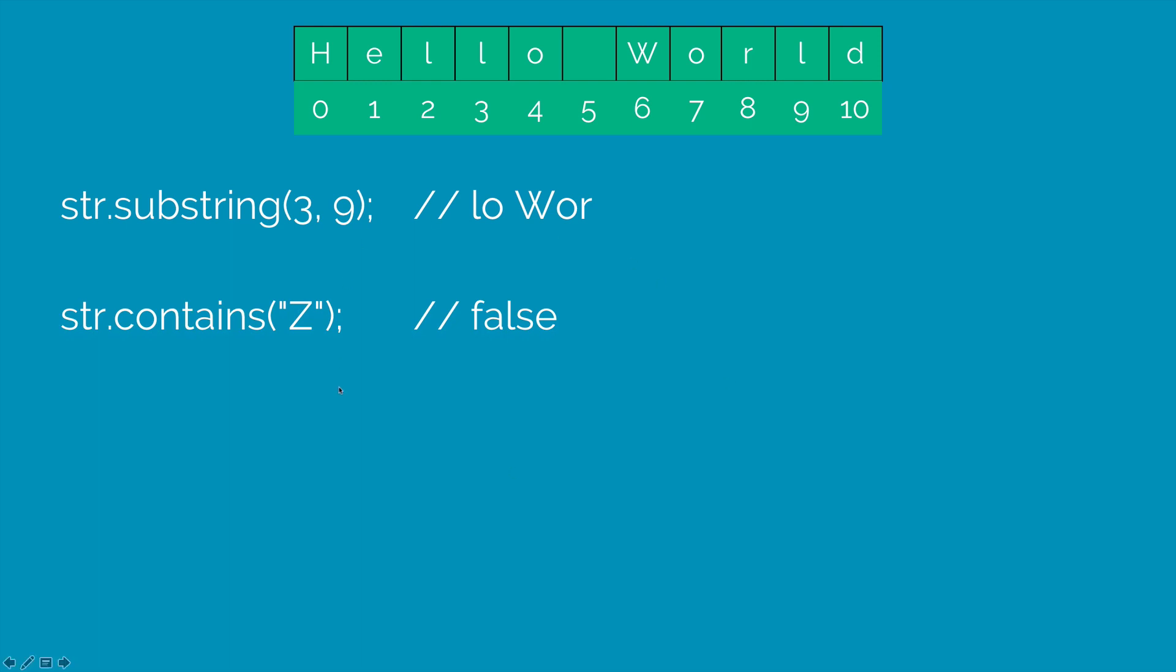And I can say str.contains where I can find if a particular character or string is present. So if I say z over here, notice that our text does not have z anywhere. So it's going to give you false.